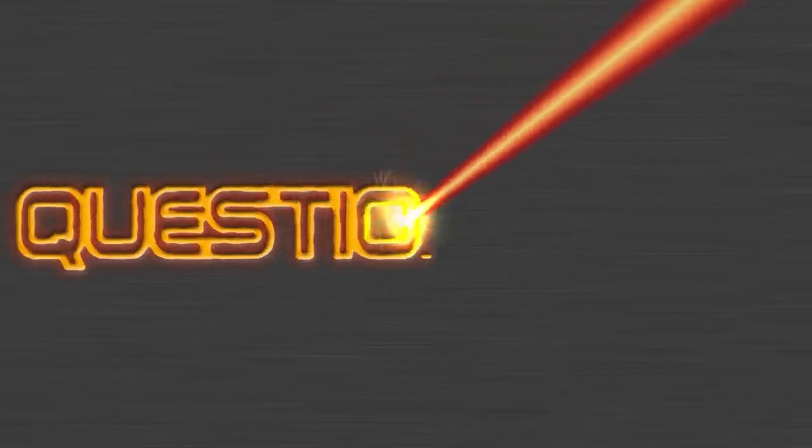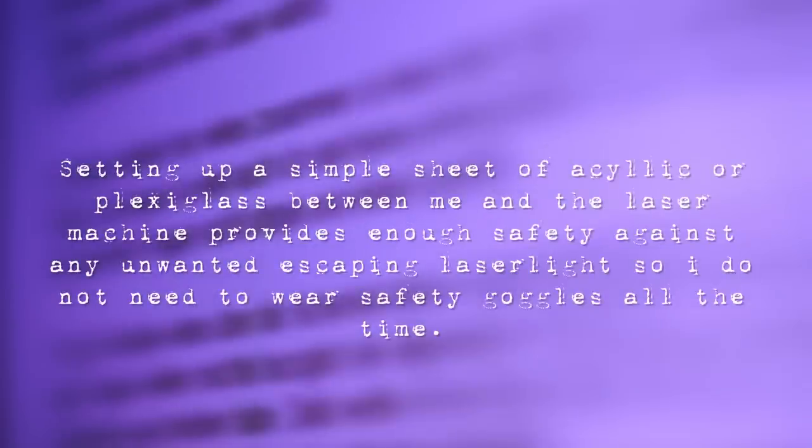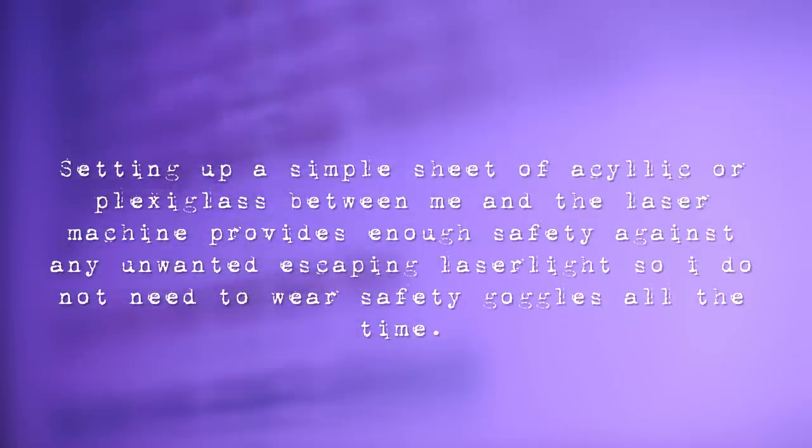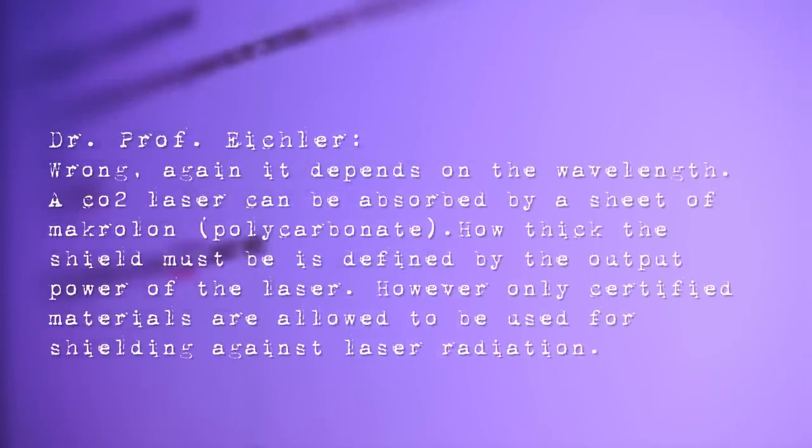Question number 8. Setting up a simple sheet of acrylic or plexiglass between me and the laser machine provides enough safety against any unwanted escaping laser light, so I do not need to wear safety goggles all the time. Wrong. Again, it depends on the wavelength. A CO2 laser can be absorbed by a sheet of macrolone, for example, which is a sort of polycarbonate. How thick the shield must be is defined by the output of the laser. However, only certified materials are allowed to be used for shielding against laser radiation.